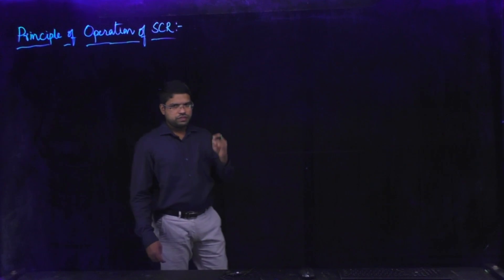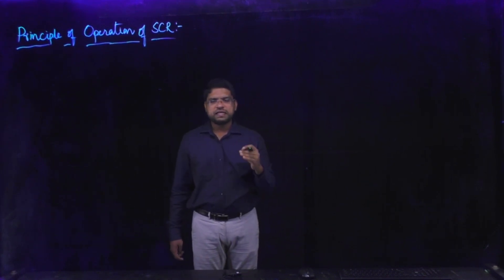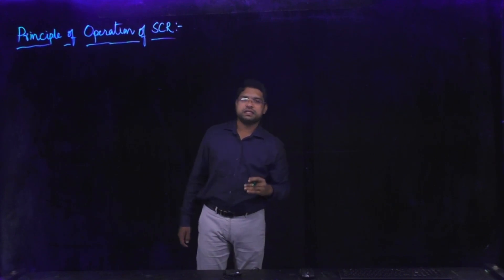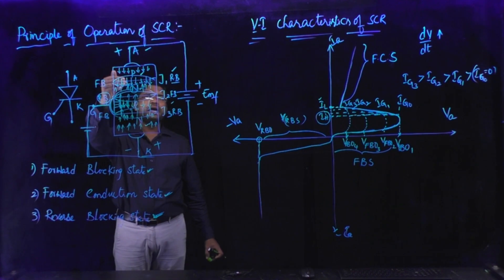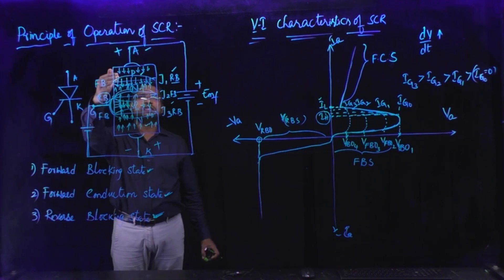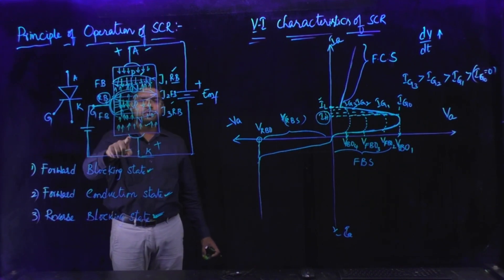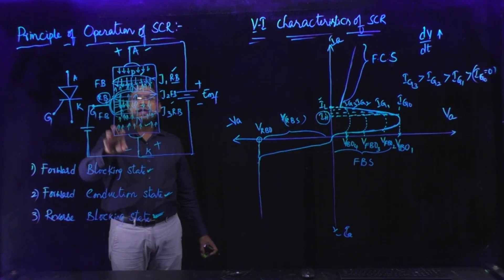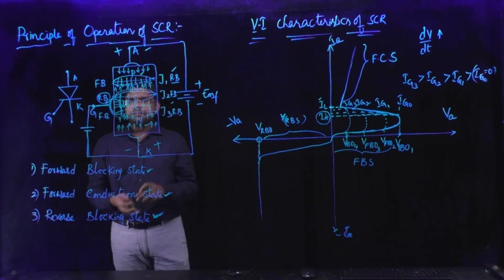SCR is a three terminal, four layered, three junction solid state fast switching semiconductor device. SCR is symbolically represented like this and has internal construction like this — that is PNPN — and there is an electrode connected to the outer P layer called as anode, electrode connected to the outer N layer is called as cathode, and the terminal which is connected to the inner P layer is nothing but gate.